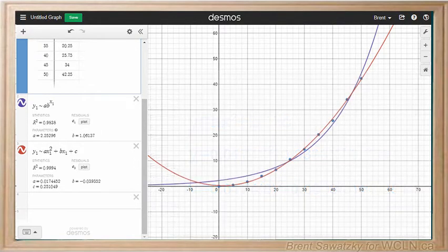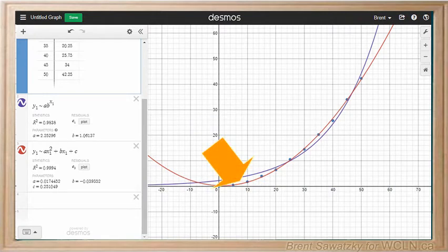We could also click around on the best fit curve until we find our x equals 8 and then see what the y is.